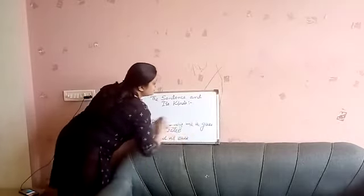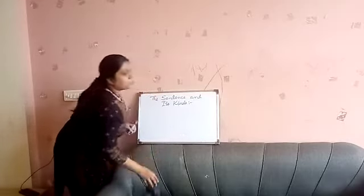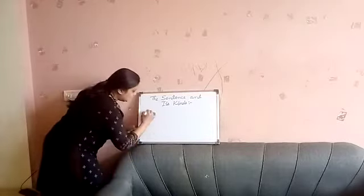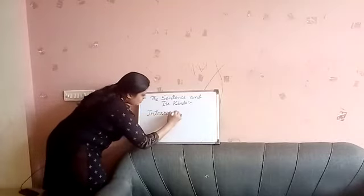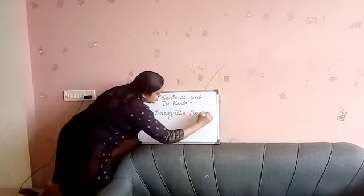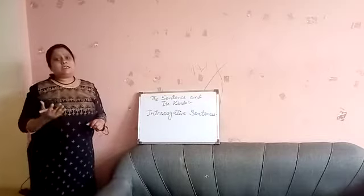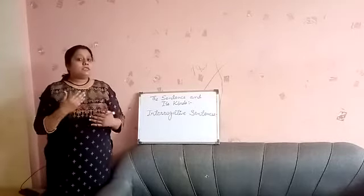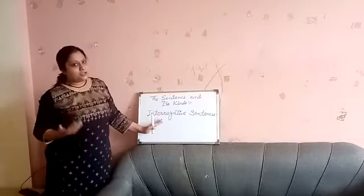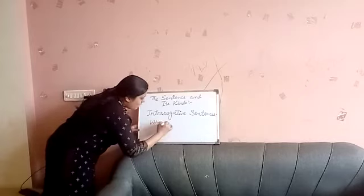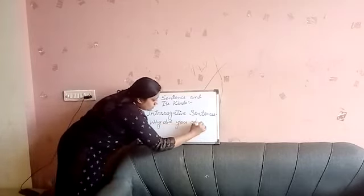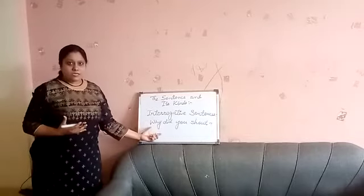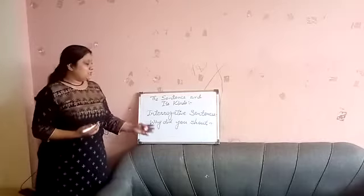The third kind of sentence is very common to every student — sentences that ask questions. Those sentences are called interrogative sentences. Any sentence which gives you a sign of interrogation, when a sentence asks you a question, is called an interrogative sentence. For example, 'Why did you shout?' — the person giving this statement is asking you a question, so this is an interrogative sentence.